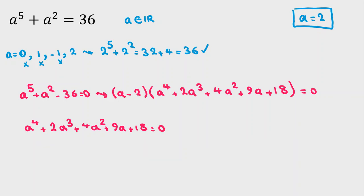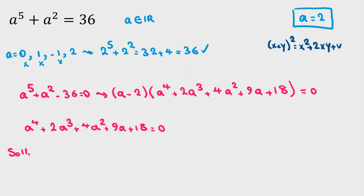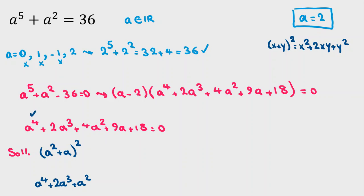I will present two solutions to show that a = 2 is the only answer. In Solution 1, I want to prove that the quartic factor is always positive. Using the identity (x plus y) squared equals x squared plus 2xy plus y squared, I note that if I write a squared plus a cubed, then squaring gives a to the 4 plus 2a cubed plus a squared. This accounts for the first two terms plus one a squared.